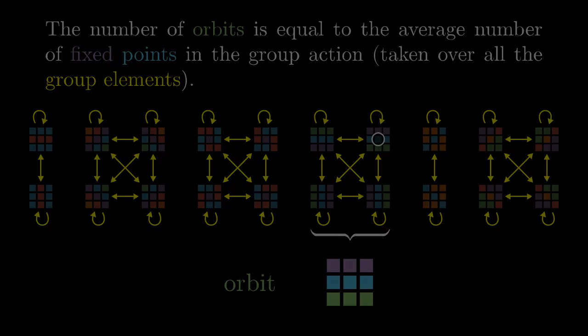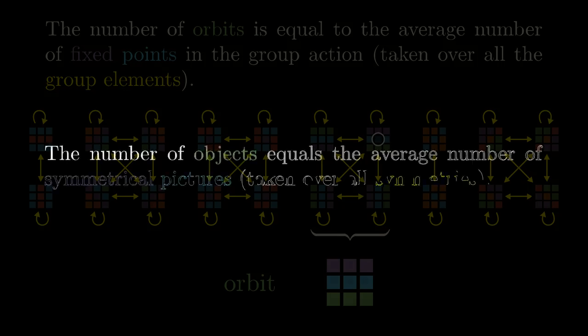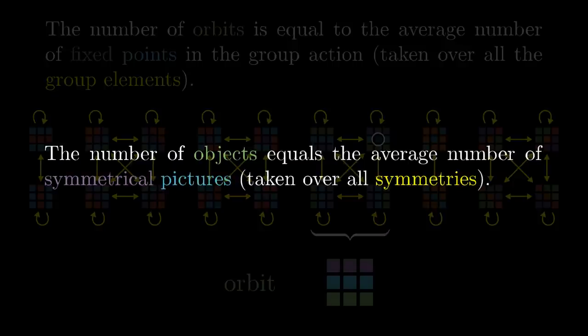On the other hand, if you just want to count some objects up to symmetries, it is probably better to just remember that the total number of objects is the average number of symmetrical pictures. And I also recommend this picture-object formulation for explaining the lemma to someone else who is not experienced in group theory. Because when it comes to explaining math, terminology matters.